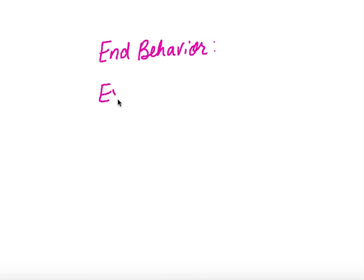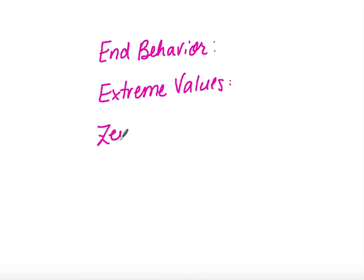To recap what we talked about today: we discussed end behaviors — what is happening at the ends of our graph — and we talked about extreme values, which are our peaks and valleys in a function. The last concept we covered was zeros. Check for your assignment on Google Classroom. I hope you all have a wonderful day.